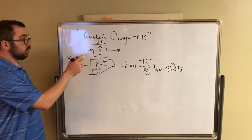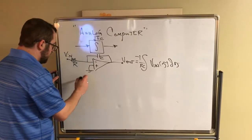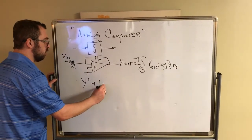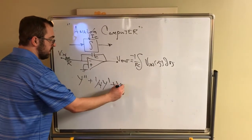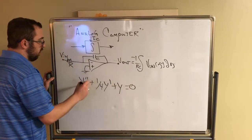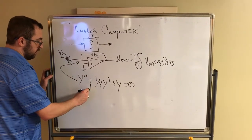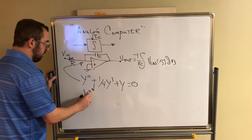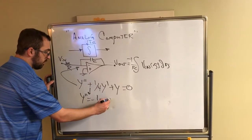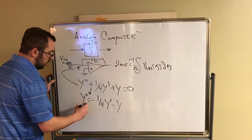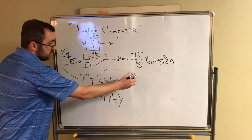What one can do is take a differential equation such as y'' + (1/4)y' + y = 0, and wire this in terms of the circuit. For this particular one, you would have y'' = -(1/4)y' - y, where y is a function, not a constant, which is equivalent to just subtracting terms to the other side.